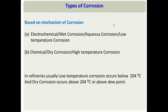Corrosion is divided into types based on mechanism. The first type is electrochemical corrosion, where corrosion occurs due to electrochemical reactions that generally require an electrolyte — usually water. This is also called aqueous or wet corrosion. In a refinery, when temperature drops, steam condenses into water, so this usually occurs at lower temperatures and is also called low-temperature corrosion.